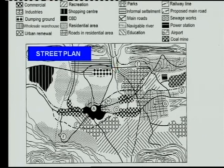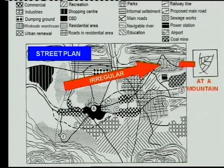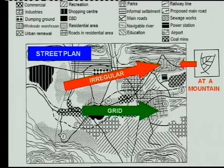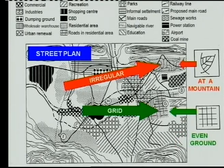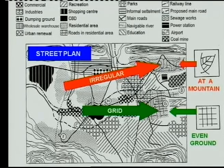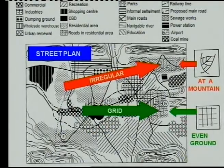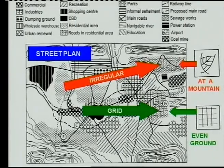The next thing to know is street plan. There are two main street plans: irregular and grid. The irregular street plan is found near mountains — on the slopes where the contours are close together. The grid street plan, where streets cross each other at 90 degrees, is found on flat or even ground. You must not only recognize the street pattern but also explain why that pattern exists in a specific area — look at the contours.